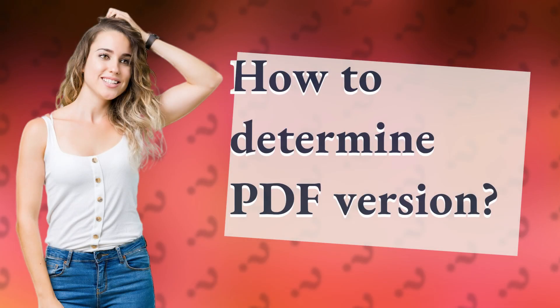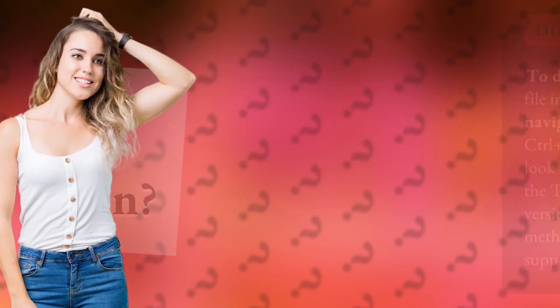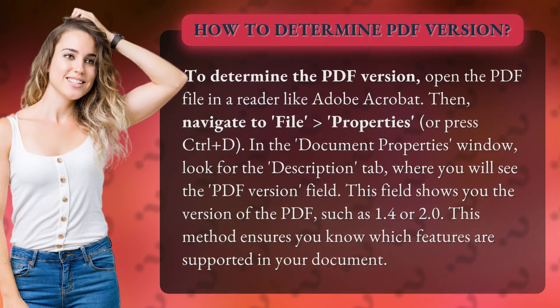How to Determine PDF Version. To determine the PDF version, open the PDF file in a reader like Adobe Acrobat. Then, navigate to File > Properties or press Ctrl+D.